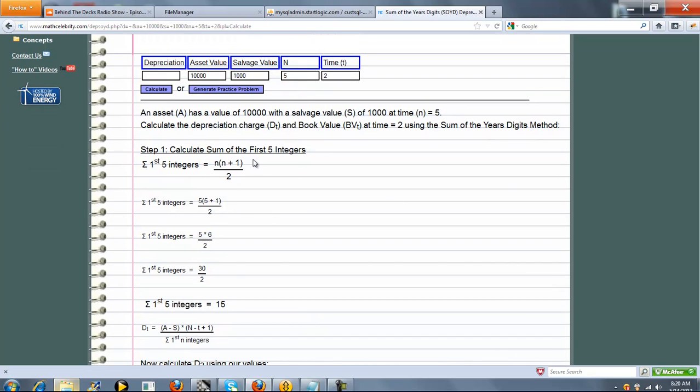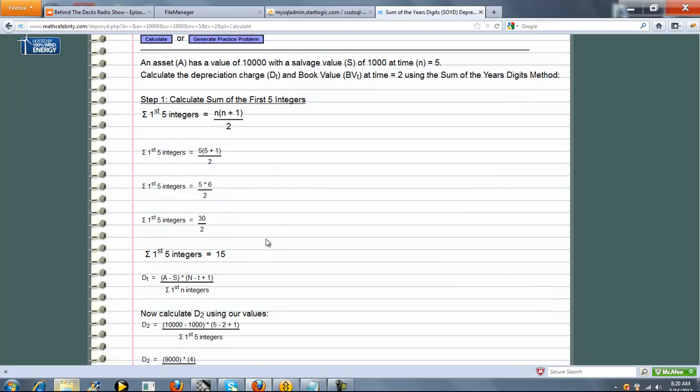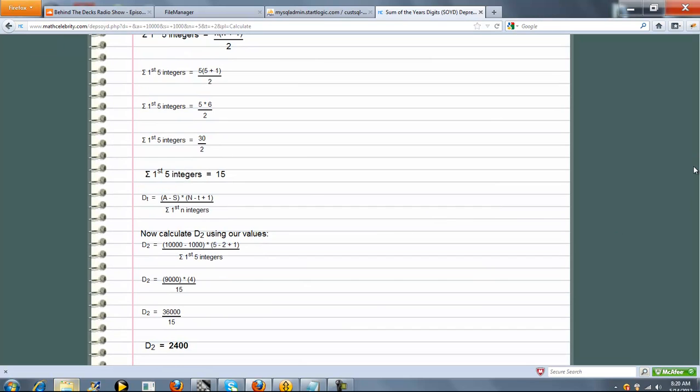First, we calculate the sum of the first five integers. Next, the depreciation charge is this formula here. So we know A, S, N, T, and now we know the first N integers sum. We go ahead and plug those numbers in.